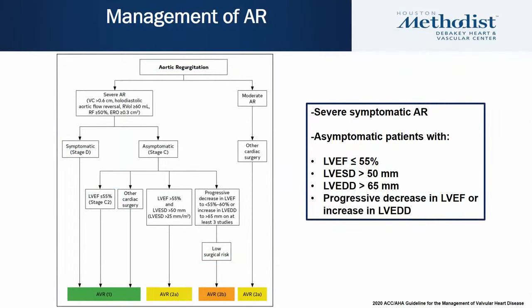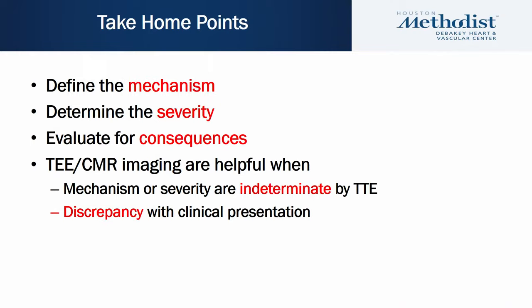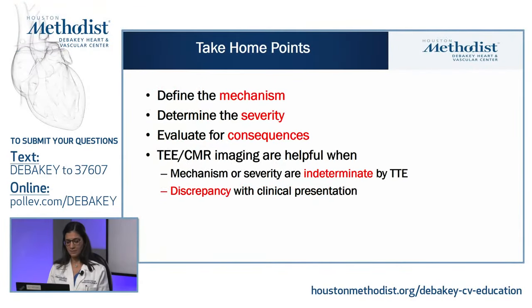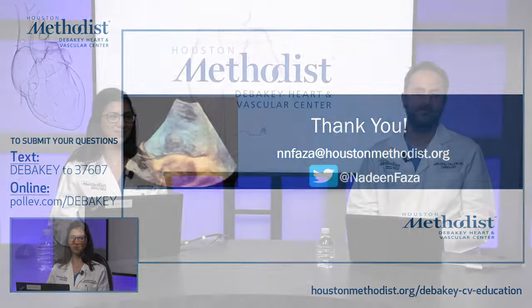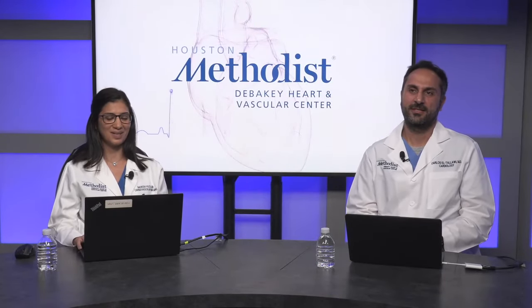Management of AI: any patient with severe symptomatic aortic regurgitation has a class I indication for intervention. In asymptomatic patients, intervention is indicated for EF ≤55%, end-systolic dimension >50 mm, end-diastolic diameter >65 mm, or progressive decrease in EF or increase in LV end-diastolic dimensions across three serial studies. The key take-home points are: define the mechanism, determine severity, evaluate consequences, and always consider TEE and MRI when mechanism or severity are indeterminate or when there is discrepancy with clinical findings.